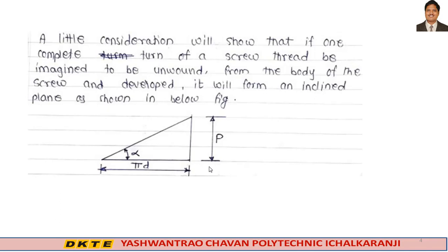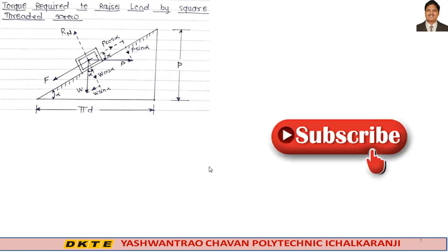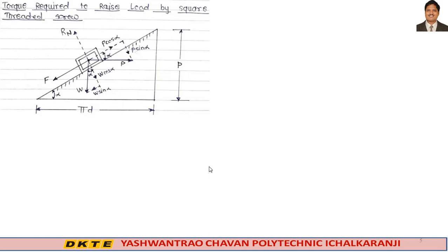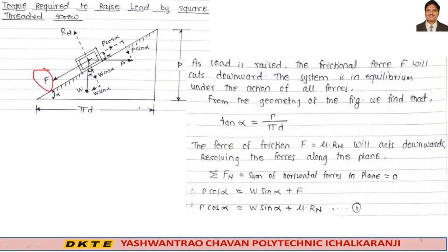The torque required to raise the load by square screw thread: taking the figure of a single thread as a slider on an inclined plane, as the load is raised, the frictional force F will act downward. The system is in equilibrium under the action of all the forces.